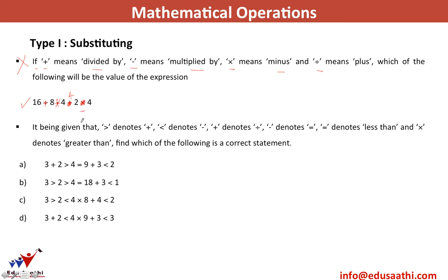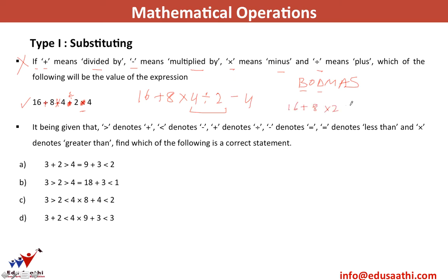After all substitutions I now have: 16 plus 8 multiplied by 4 divided by 2 minus 4. Applying the normal BODMAS rule — no bracket, then division: 4 divided by 2 gives 2. Then multiplication: 8 multiplied by 2 is 16. So I have 16 plus 16 minus 4, which equals 32 minus 4, giving an answer of 28.